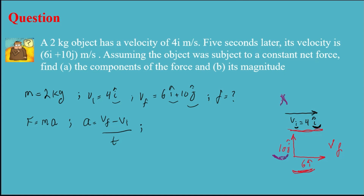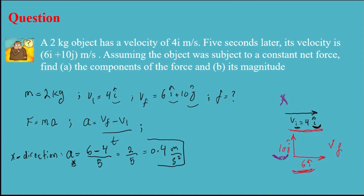I'll calculate the acceleration in the x axis and y axis separately, then find the magnitude of acceleration, and then find the force. In the x direction, acceleration ax equals (6 minus 4) divided by 5 seconds, which is 2 over 5, equal to 0.4 meters per second squared.